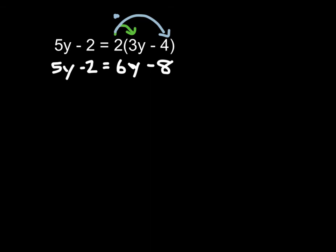Now, we need to collect our like terms on the same side of the equation. I'm going to choose to start by subtracting 5y from both sides. Here are 3 other options you could have done. You could have added 2 to undo this or get rid of this. We could have added 8 to both sides to get rid of this. We could have subtracted 6y from both sides as well. I'm going to subtract 5y.